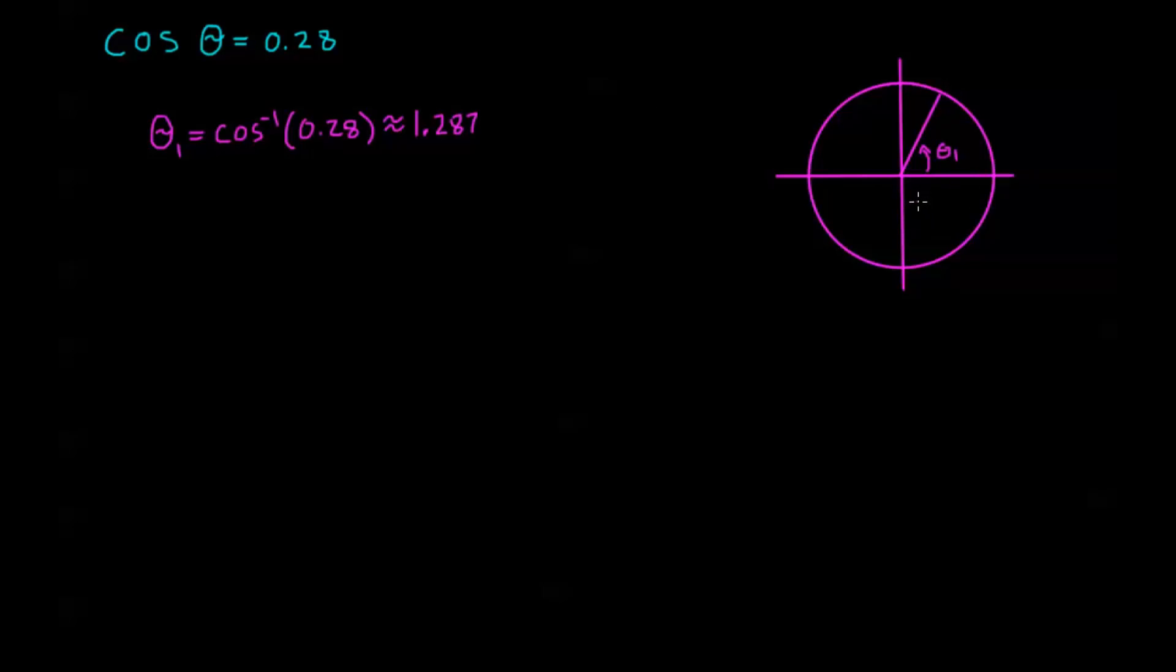In particular, I'm looking in quadrant 2 somewhere that has the same reference number as 1.287. Now since 1.287 is in quadrant 1, my reference number here is actually going to be exactly 1.287, so I'm looking at this angle over here. We're going to go all the way around to here. This is my θ₂.